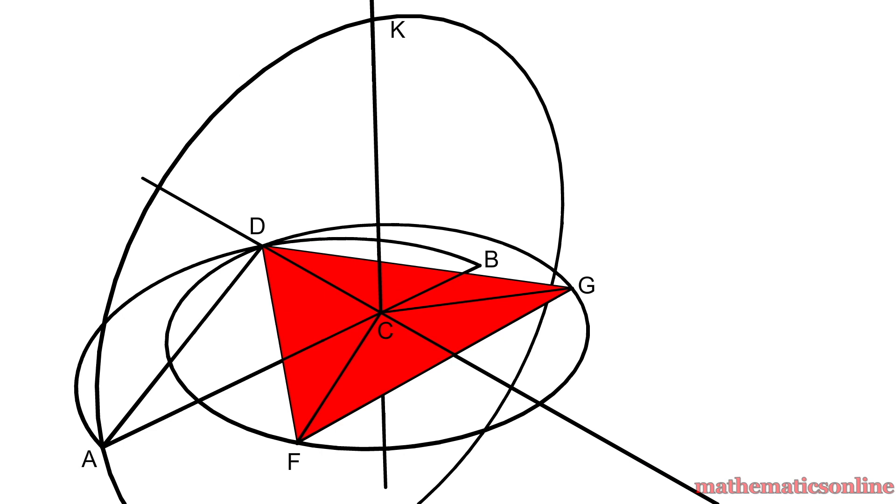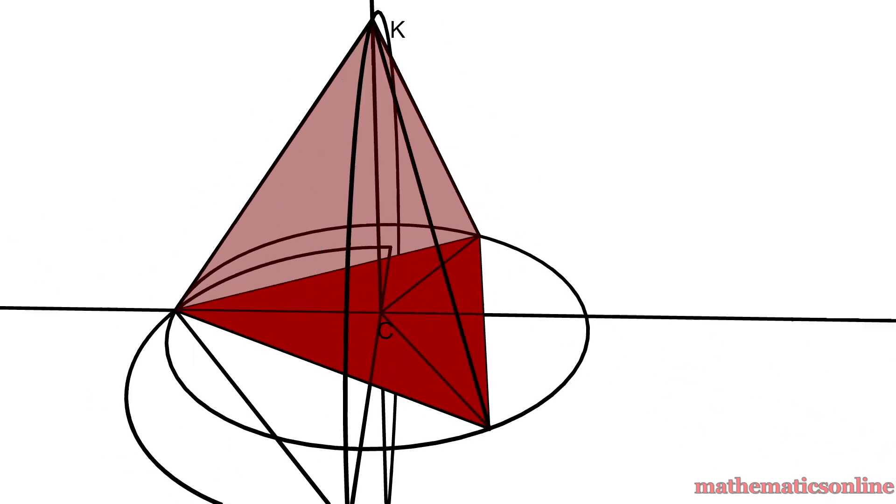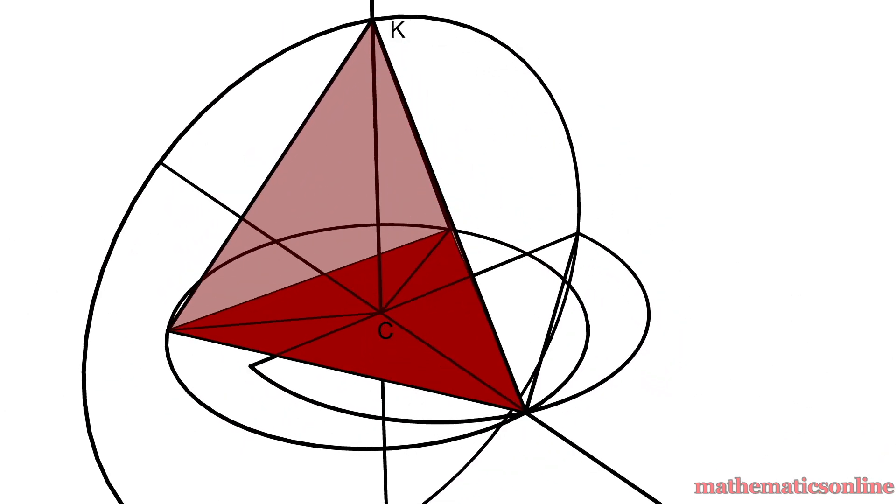Finally, we construct lines DK, GK, and FK, and this construction results in the tetrahedron DFGK. So this is how Euclid constructed the first platonic solid more than 2000 years ago.